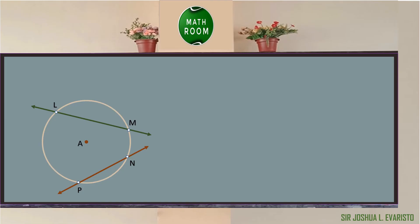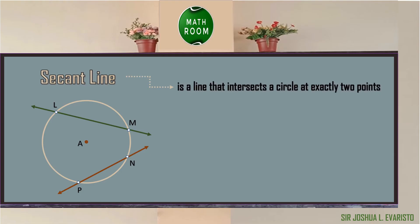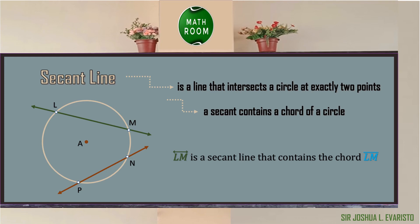After tangent line, let's talk about secant line. By definition, a secant line is a line that intersects a circle at exactly two points. In the given figure, we have two secant lines: line LM and line PN. Also, a secant contains a chord of a circle. So line LM is a secant line that contains chord LM, and line PN is also a secant line that contains chord PN.